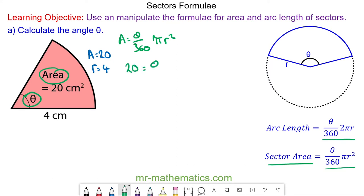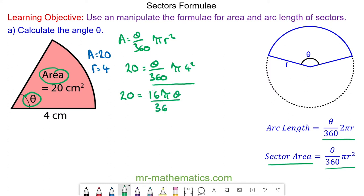20 is equal to theta over 360 times pi times the radius squared. To find theta I'm going to use a balance method to make theta the subject. Simplifying the right-hand side: 20 is equal to 4² which is 16, times pi, times theta over 360. We can simplify the fraction 16 over 360 to 2 over 45, so we have 20 is equal to 2πθ over 45.